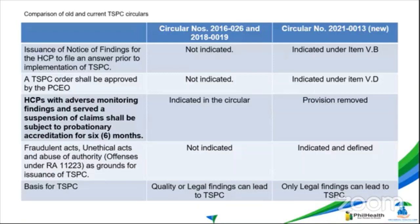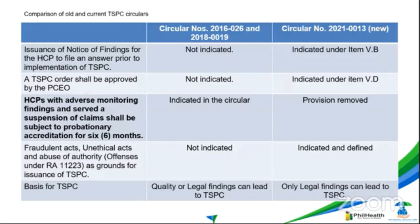This is the matrix to show the difference between the two circulars. In the old circular, we did not issue a notice of finding for the hospital or facility to respond. In the new circular, we now issue a notice of finding and the facility is given 3 days to refute the finding. Also, the TSPC order shall now be approved by the PCO. In the first circular, the VP or anyone could approve the TSPC. But in the new circular, the president has sole authority to approve a TSPC order.